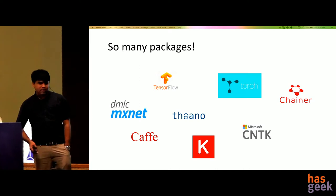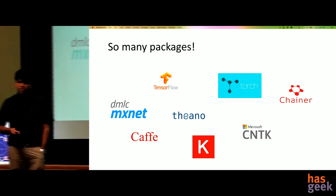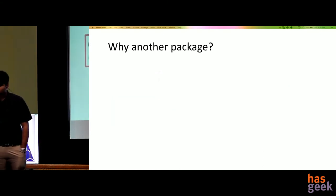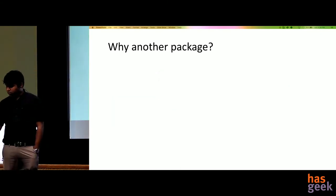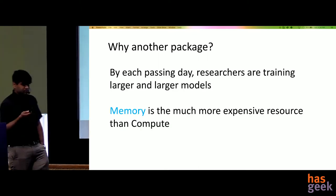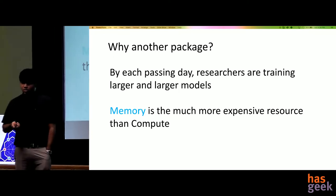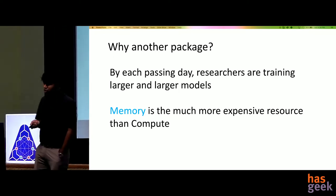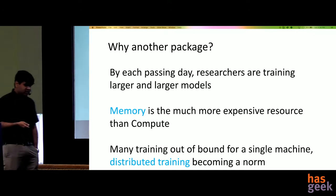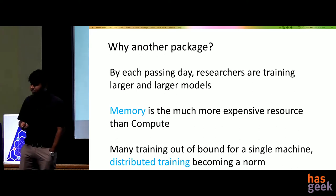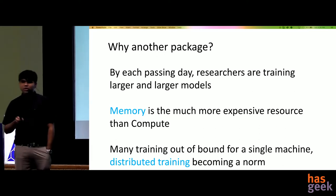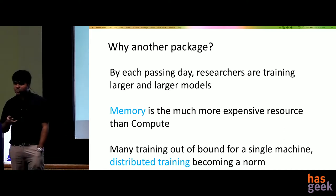There are just too many deep learning projects — why come up with one more? The reasons are that by each passing day, we are training larger and larger models. Memory is the most costly resource. Compute is cheap these days, but memory is still very expensive. Many trainings are now out of bound for a single machine, even with multiple GPUs. So you need distributed training and something that scales seamlessly.